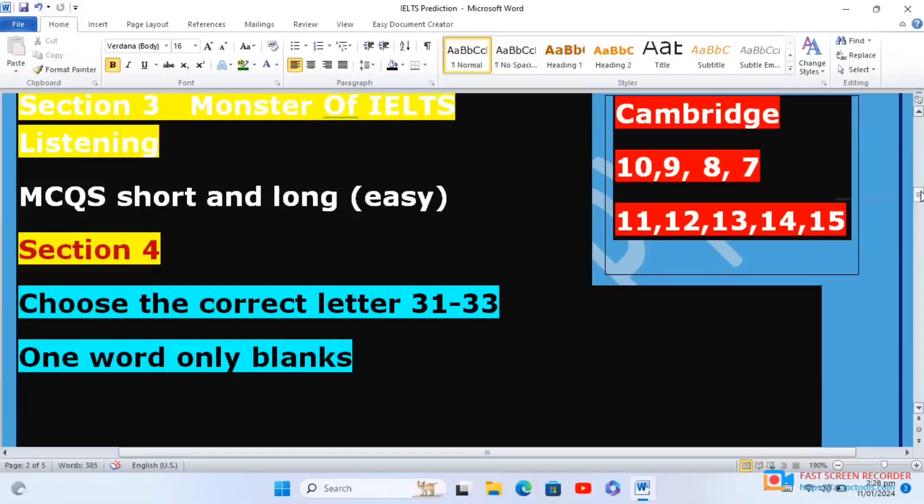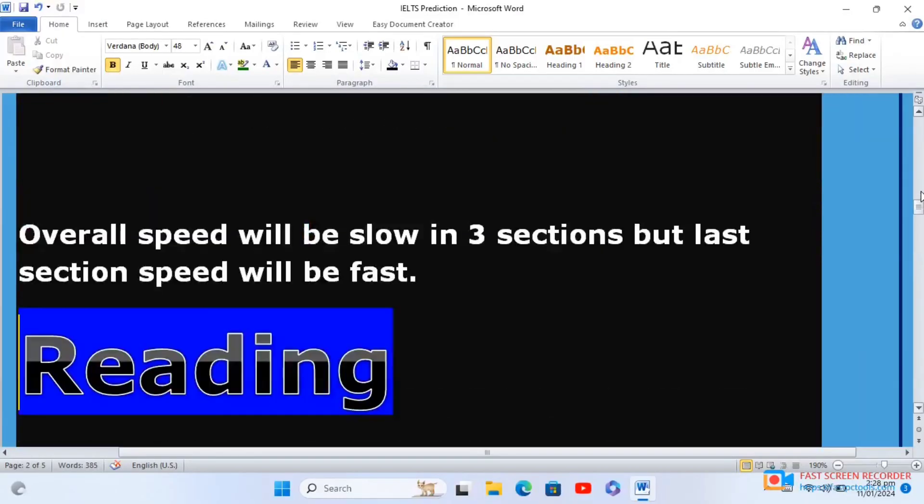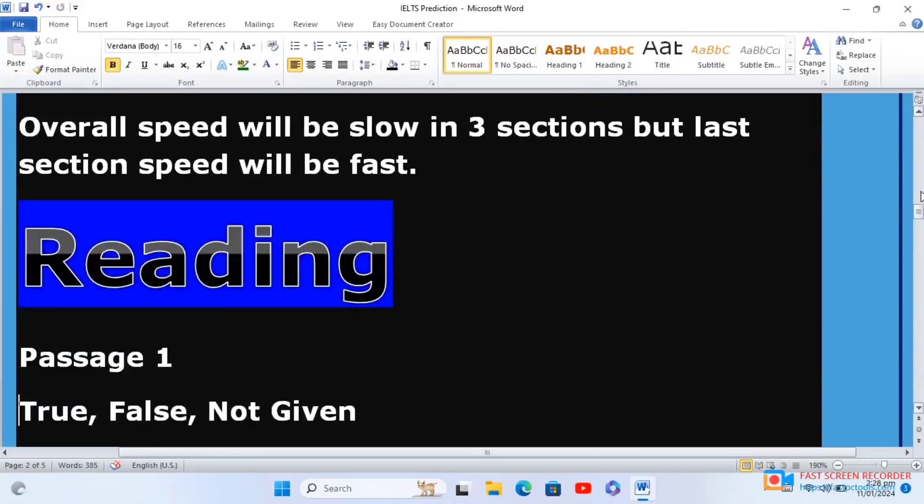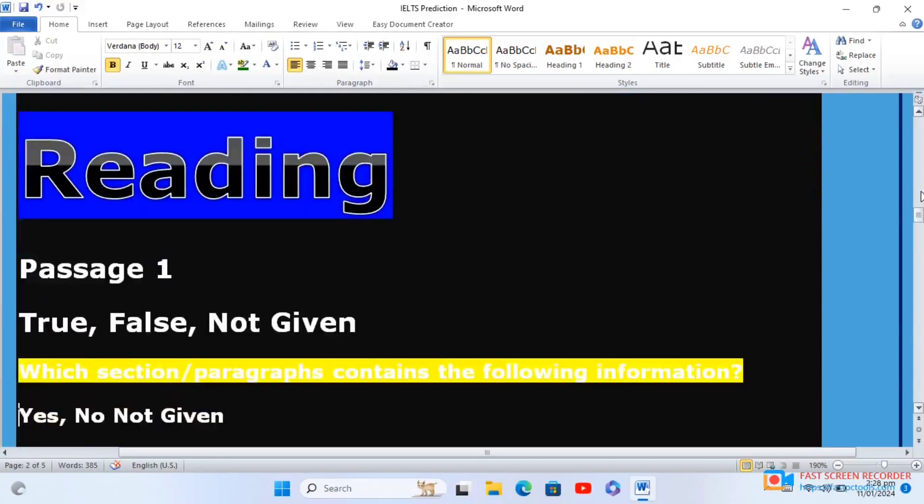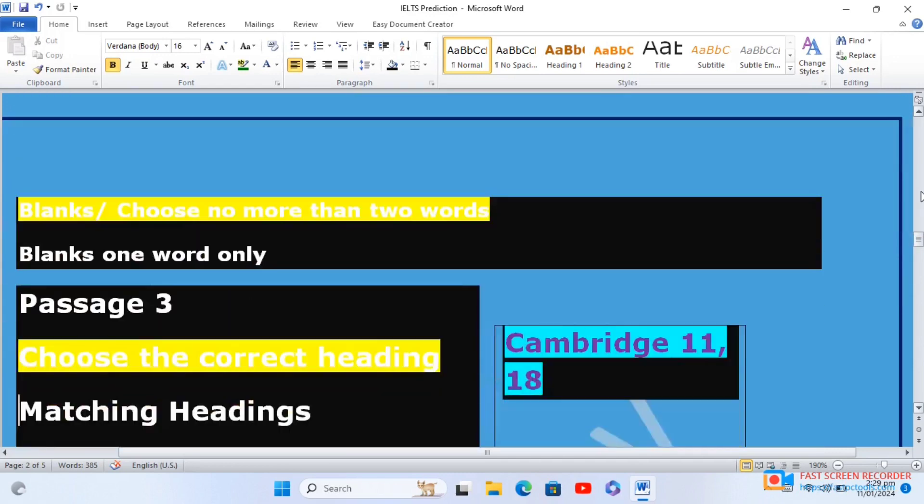If we will talk about the reading, in reading passage one in academic, true false not given would be there and yes no not given would be there. If you're not able to solve, then if you need six, solve all the other difficult questions first, I mean matching heading, blanks, summary completion, and then after that you can come back to it.